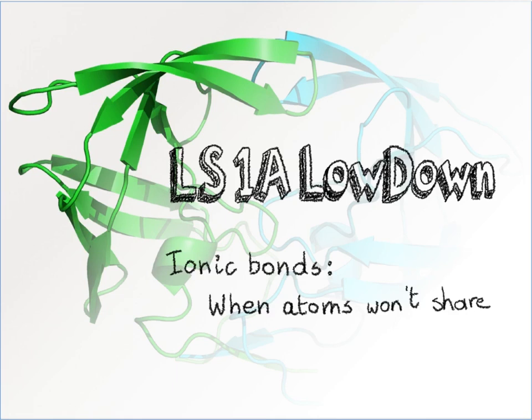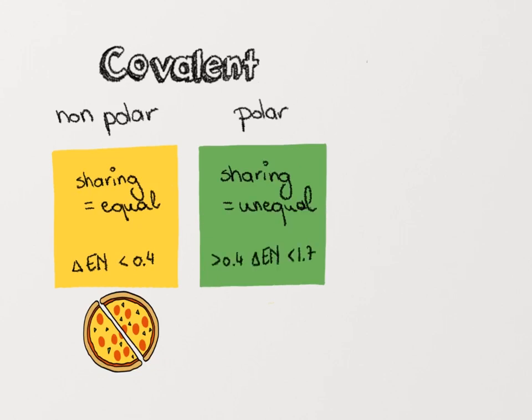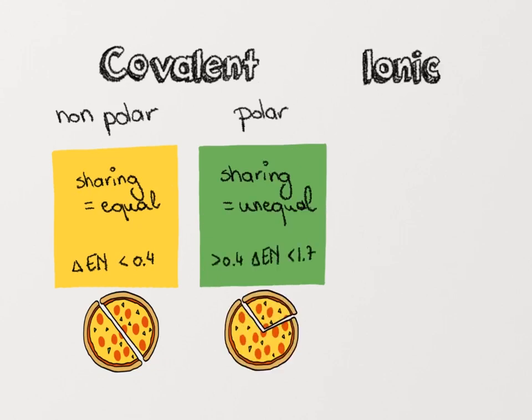Ionic bonds: when atoms won't share. In this video we will explain what ionic bonds are. Previously we explained what covalent bonds are and how they can be polar or nonpolar depending on whether the atoms share the electrons equally or not. But where do ionic bonds come in?